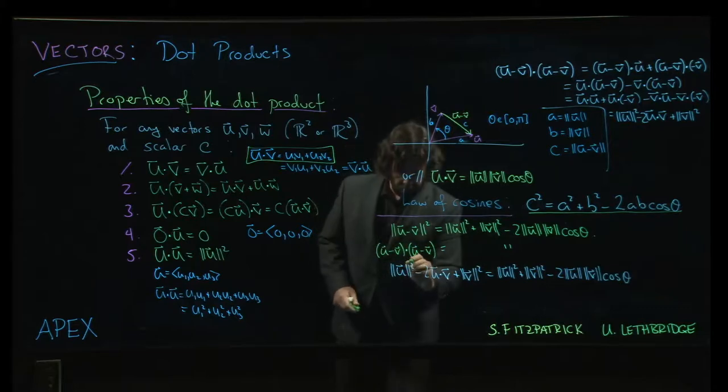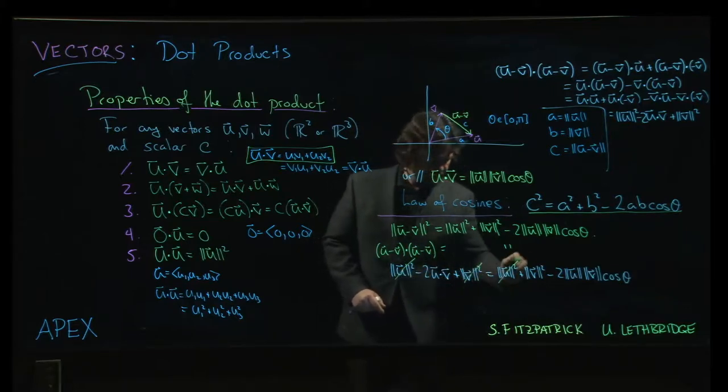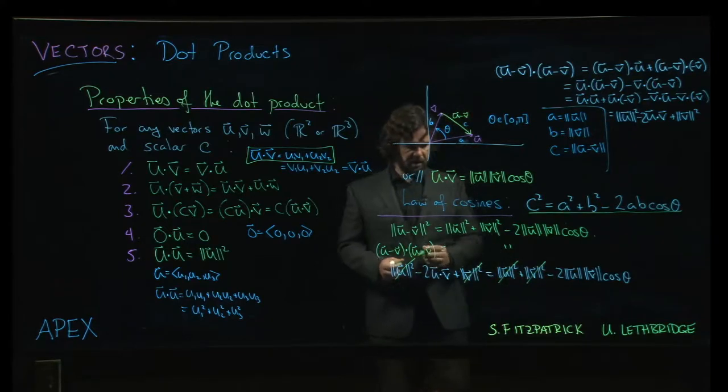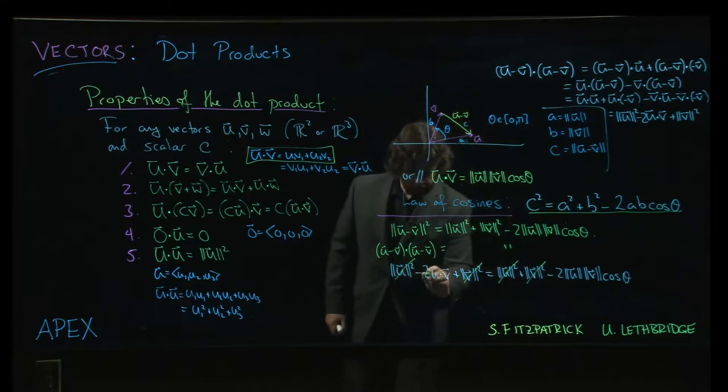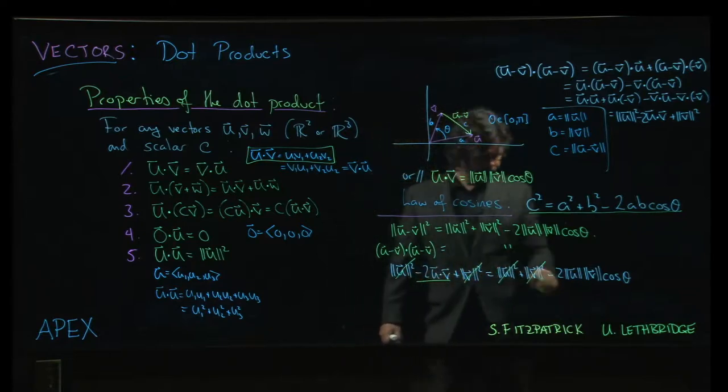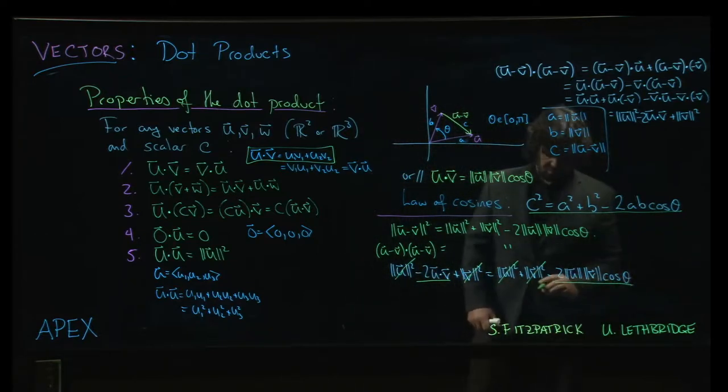There's a magnitude of u squared on either side. You can cancel those, same thing with the magnitude of v, and that leaves us with this term and this term.